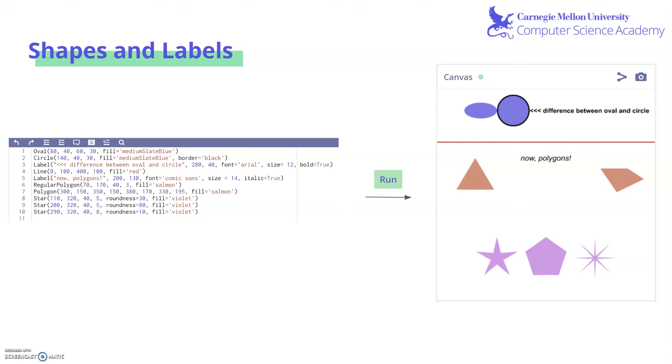Here we have a bunch of examples of all the previously discussed shapes and labels. At the top, we have an oval and a circle. Here on line one, our oval with a center of 80-40, a width of 60 and a height of 30. See that it is longer than it is tall with a fill of medium slate blue. Then we have a circle with a border of black right next to it. And the label saying this is the difference between an oval and a circle. Then we have a line drawn with a fill of red right here.